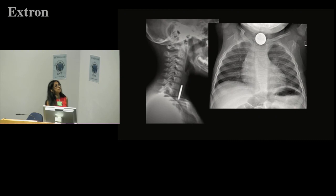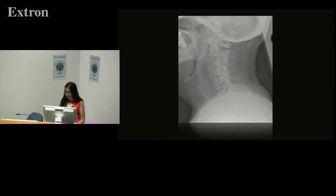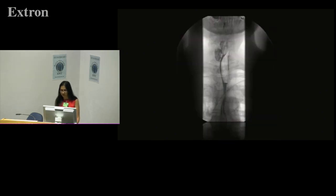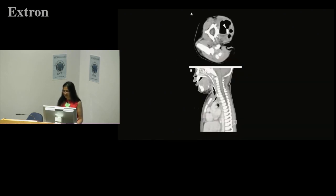Here you can clearly see a coin foreign body — AP and lateral — this is in the upper esophagus. And this is the pre-vertebral soft tissue, which should be two millimetres, but here it's expanded to more than a centimetre, due to a retropharyngeal abscess from a non-radiopaque foreign body. We can also use water-soluble contrast to assess for non-radiopaque foreign bodies, but increasingly we're using CT scan.